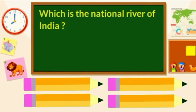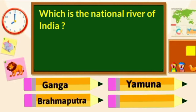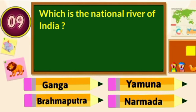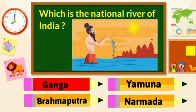Which is the National River of India? Ganga, Yamuna, Brahmaputra or Narmada? The River Ganga is the National River of India.